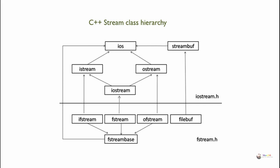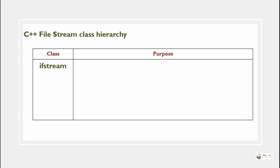This is the complete hierarchy of stream classes in C++. There are a total of five different classes involved in file stream classes in the C++ file stream class hierarchy.